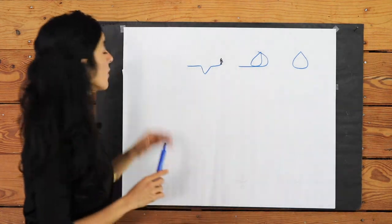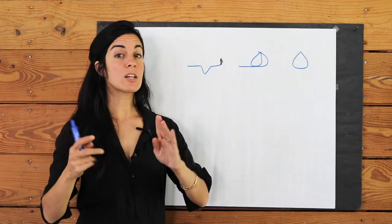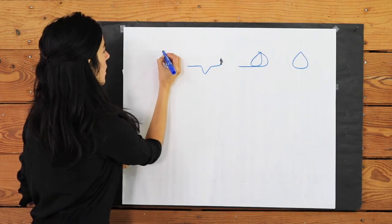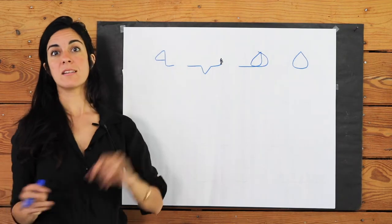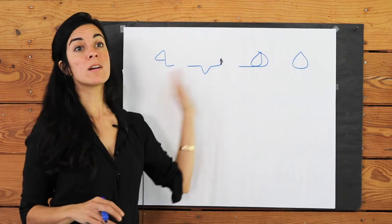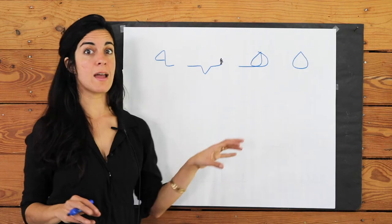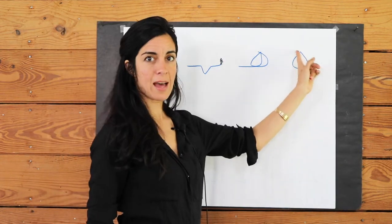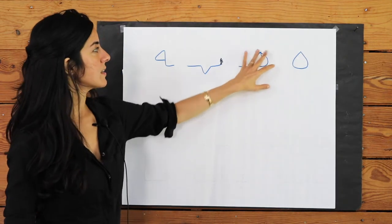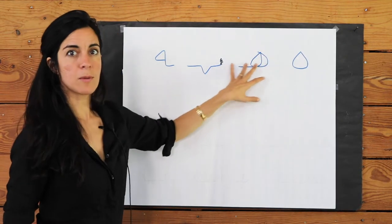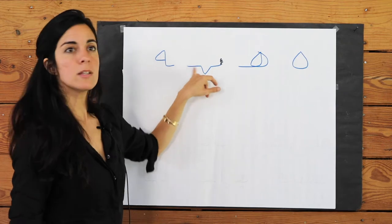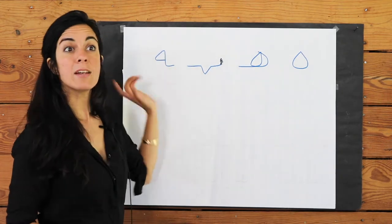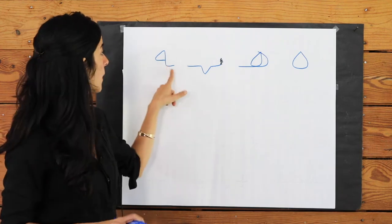And if it comes at the end of a word and there is something connected to it beforehand, it looks like this. So these are the four different versions of the letter H: all by itself, at the beginning of a word, in the middle, and at the end connected to something before it.